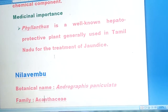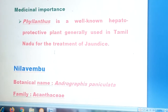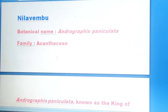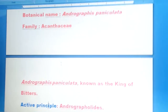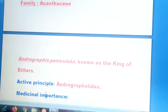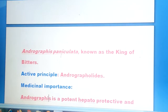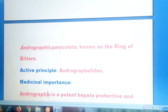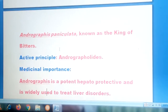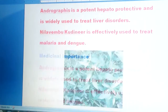The next useful plant is Nilavembu, whose botanical name is Andrographis paniculata, coming under the family Acanthaceae. This is known as the king of bitters. Its active principles are Andrographolide. It is medically important as Andrographolide is a potent hepatoprotective compound and is widely used to treat liver disorders. Nilavembu kudineer is also effectively used to treat malaria and dengue fever.